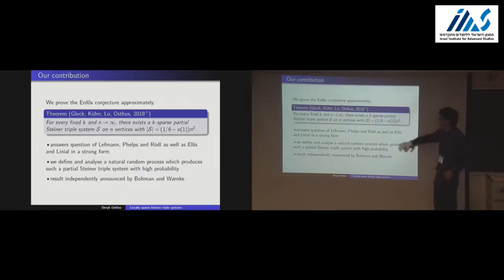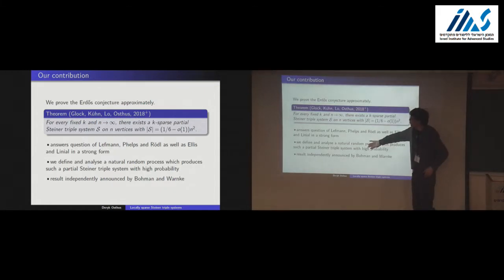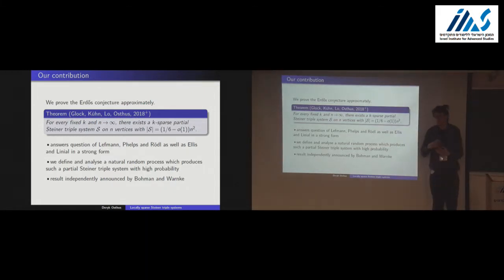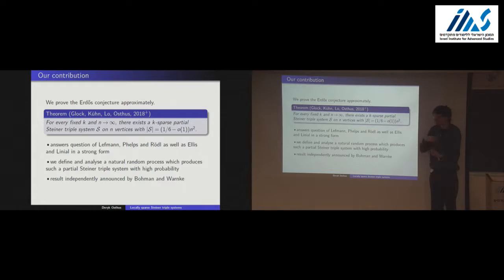The proof is very natural: we construct the triple system greedily in a random greedy process, where we add triangles or triples one by one, always keeping the current system sparse and always keeping it as a partial Steiner system.